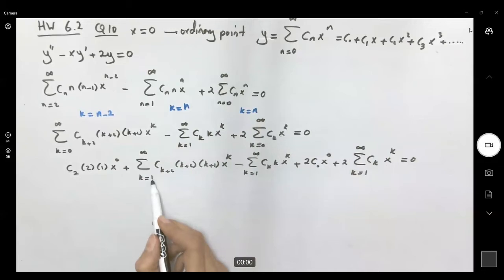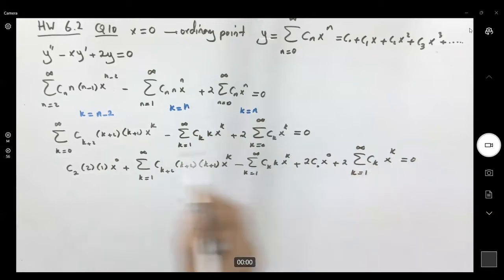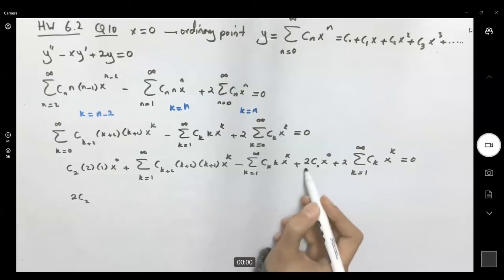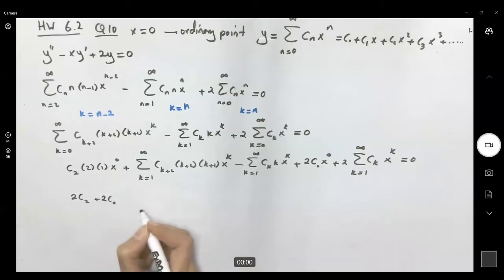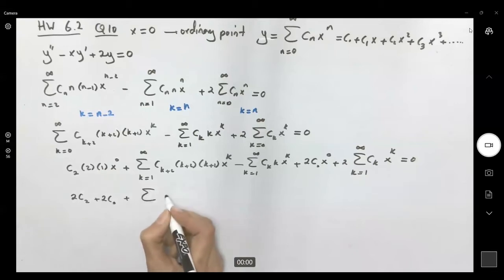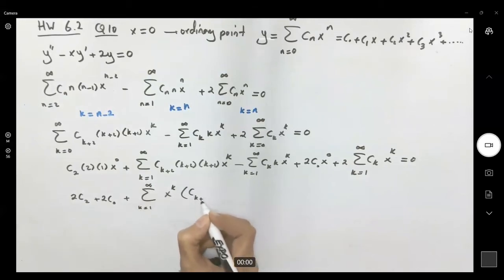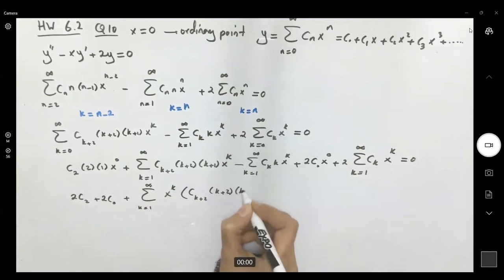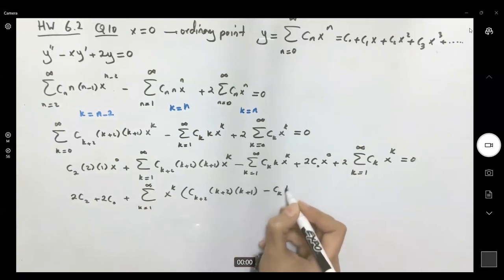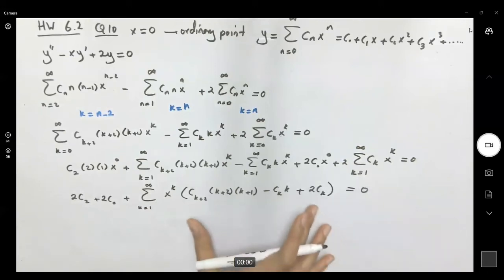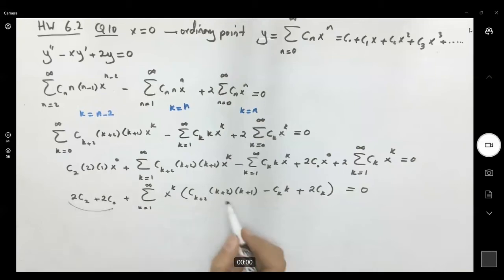Now all series start from k=1 and the exponents are all x^k, so we're allowed to combine them. The constant terms give 2c₂ plus 2c₀, and the series terms combine into a sum from k=1 to infinity of [c_(k+2)·(k+2)·(k+1) minus c_k·k plus 2c_k]·x^k, all equal to zero.